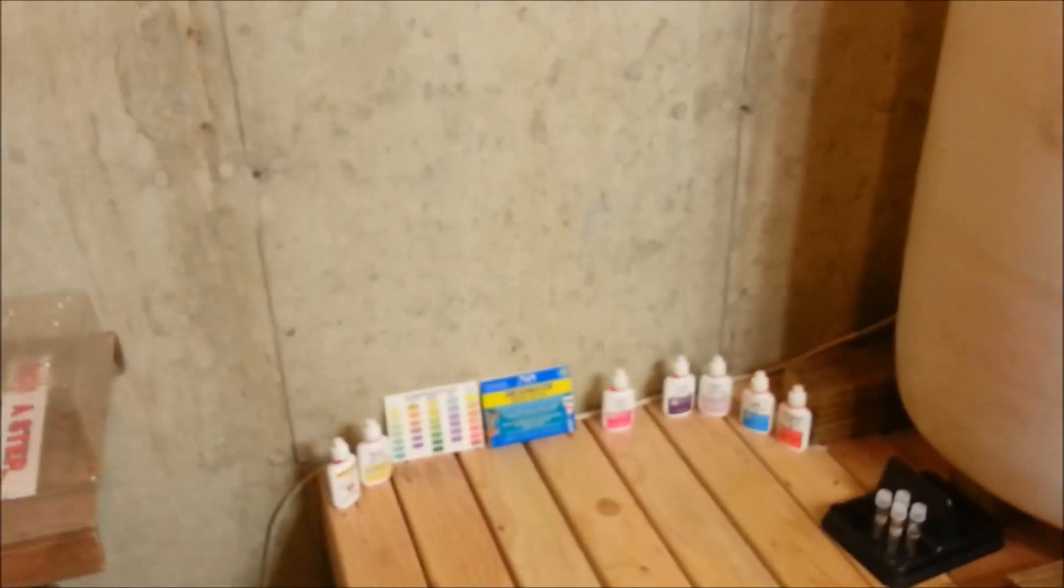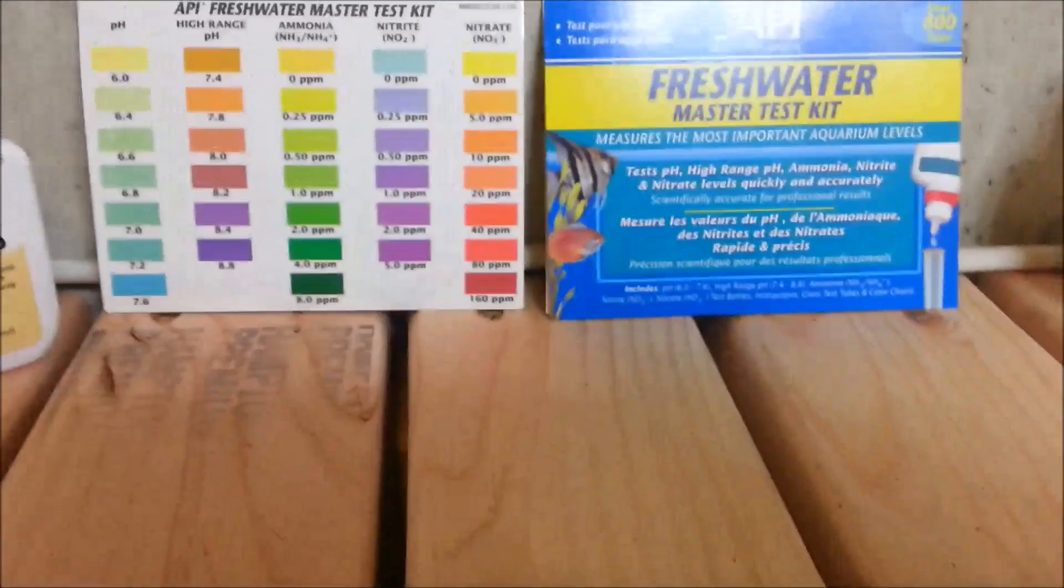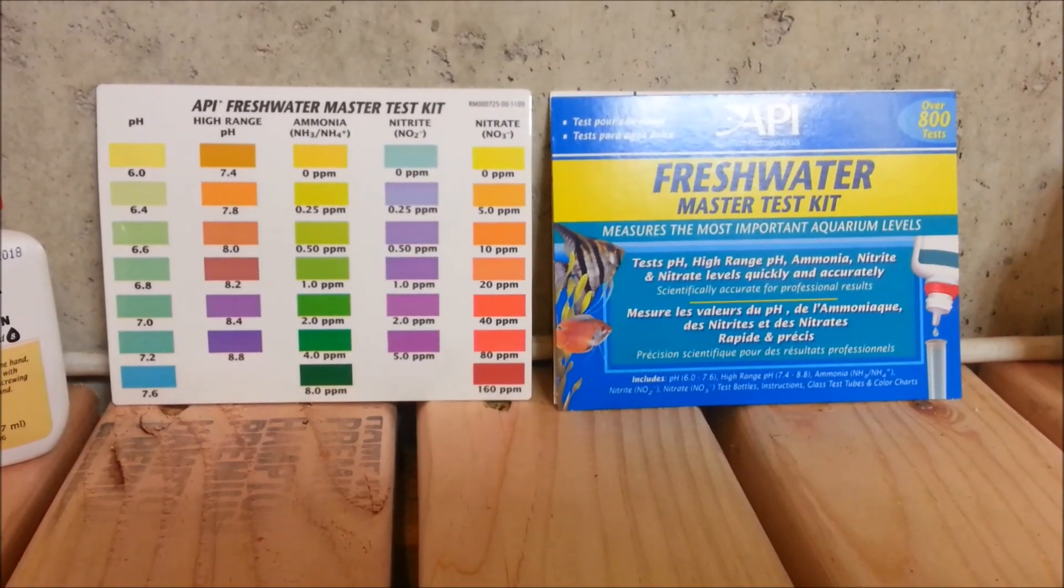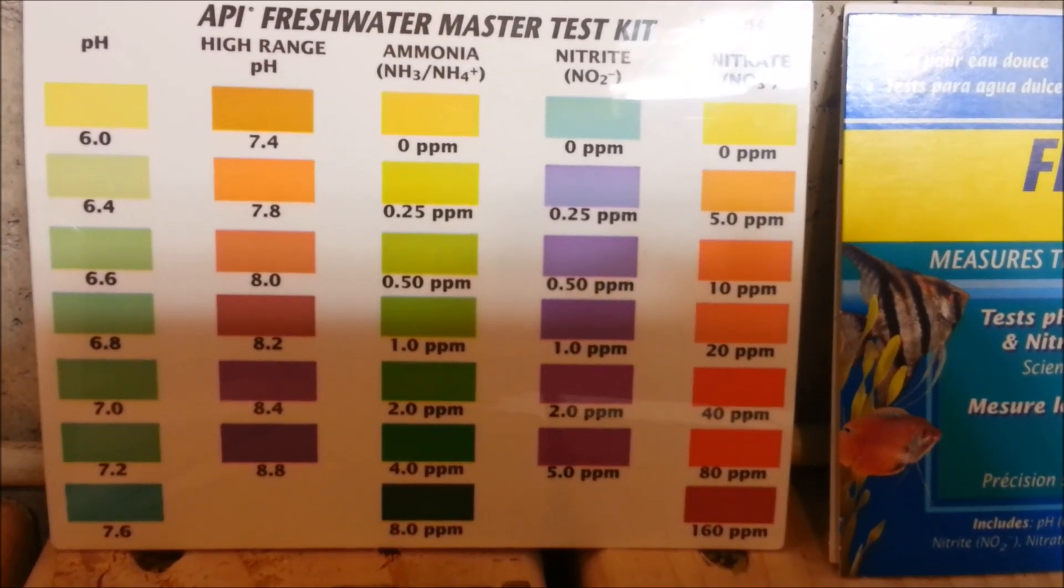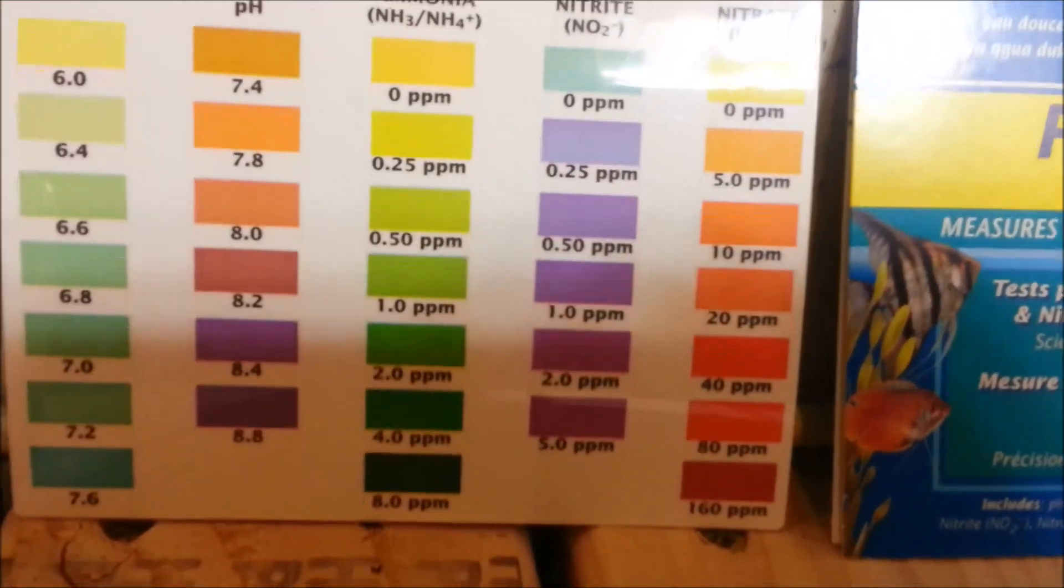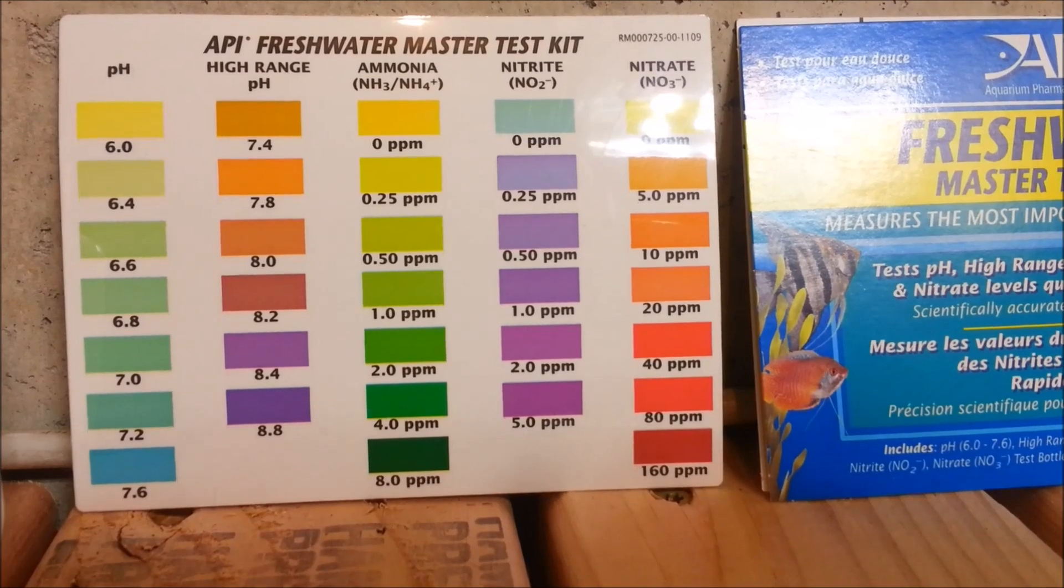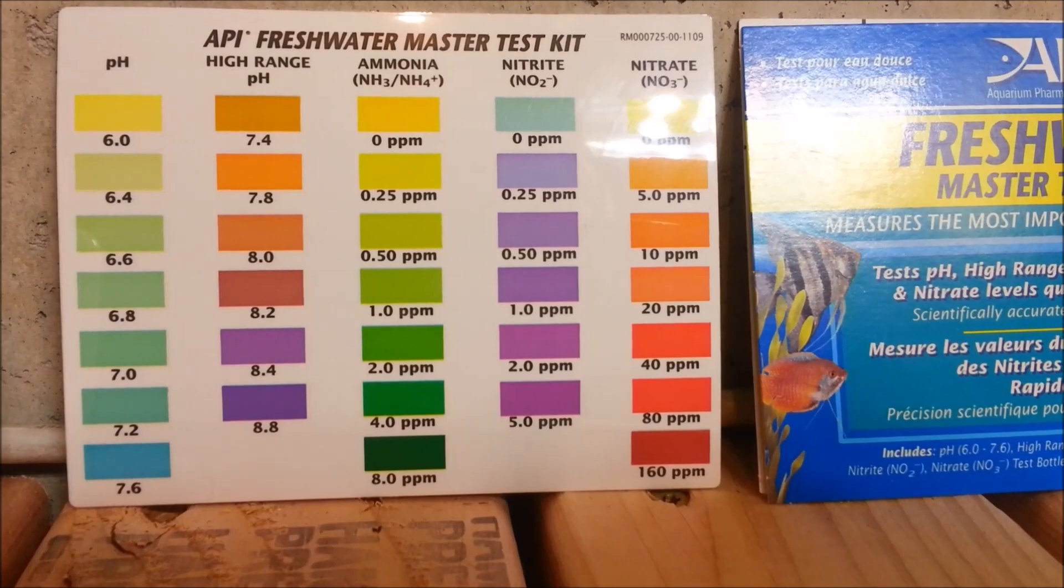The API Freshwater Master Test Kit - I picked this one up on Amazon for $21.99, and so far it's been working really well. It's very easy to use and comes with four basic tests. You can see there's a little level pH that runs from 6 to 7.6, and there's a high range pH test - it's a separate test for anything from 7.4 up to 8.8. Then there's the ammonia test which runs from 0 to 8 parts per million, a nitrite test up to 5 parts per million, and then a nitrate test which runs up to 160 parts per million.